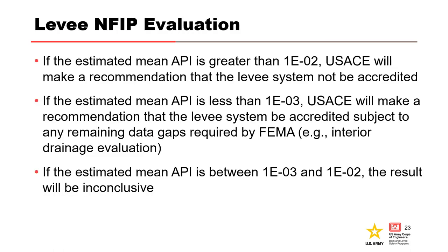Based on the results of the risk assessment, the Corps of Engineers will provide an accreditation recommendation for the levee system in NFIP. If the estimated mean API is greater than 1×10⁻², the Corps will recommend the levee system is not accredited. If less than 1×10⁻³, the Corps will recommend accreditation subject to any remaining data gaps required by FEMA, such as interior drainage evaluation. If the mean API is between 1×10⁻³ and 1×10⁻², the result will be inconclusive and subject to further evaluation.